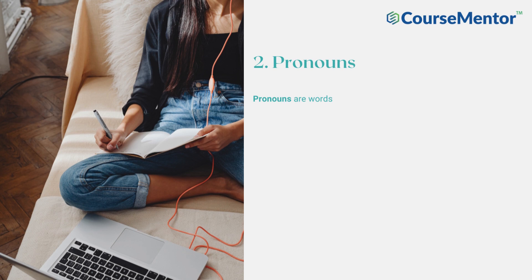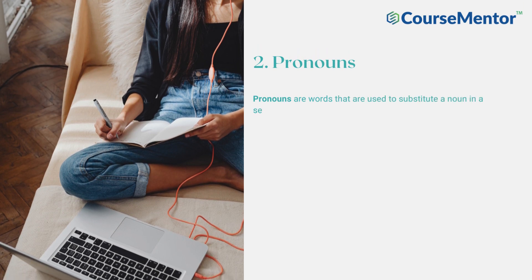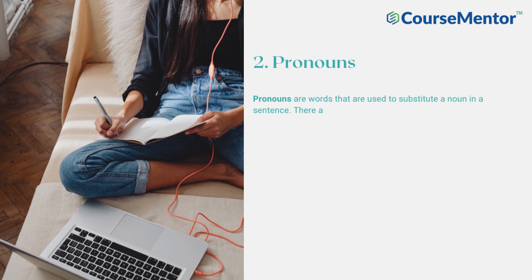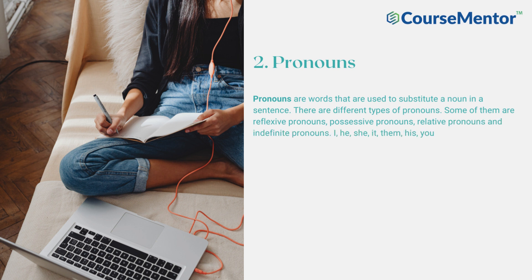Pronouns. Pronouns are words that are used to substitute a noun in a sentence. There are different types of pronouns. Some of them are reflexive pronouns, possessive pronouns, relative pronouns and indefinite pronouns. I, he, she, it, them, his, yours, anyone, nobody, who, etc. are some of the pronouns.